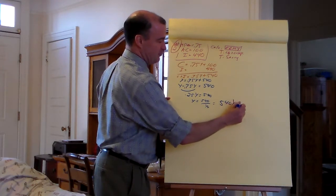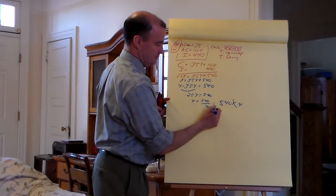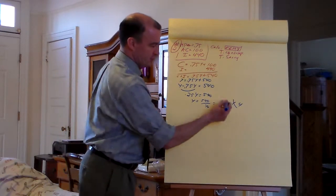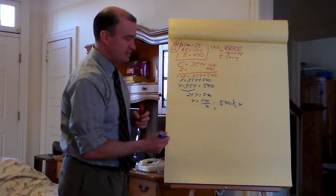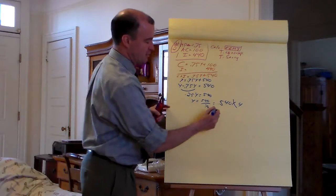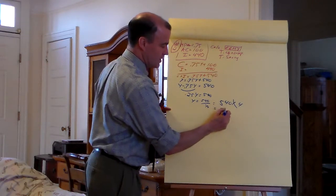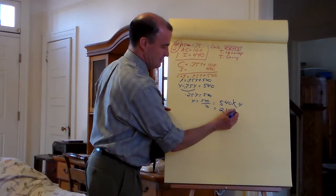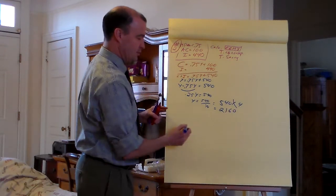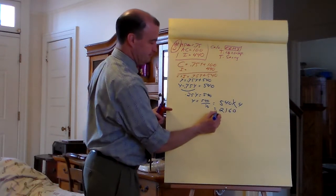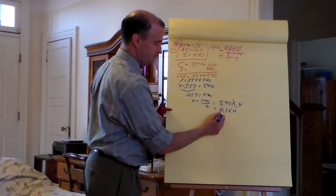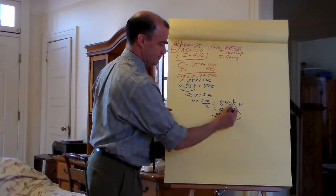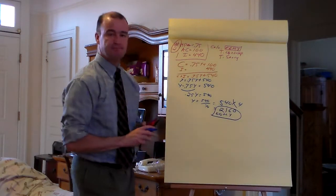540 times 4: 4 times 40 is 160, 4 times 500 is 2,000 — that's 2,160 for equilibrium income.